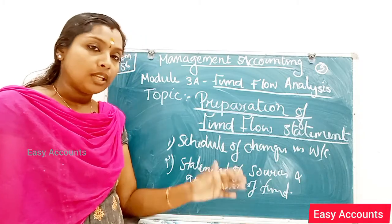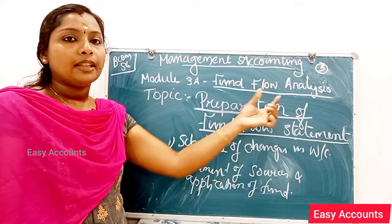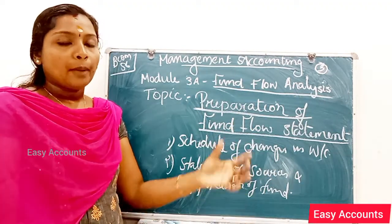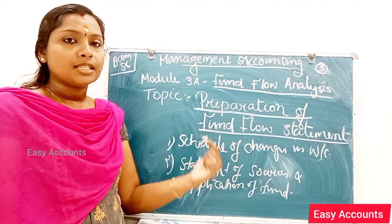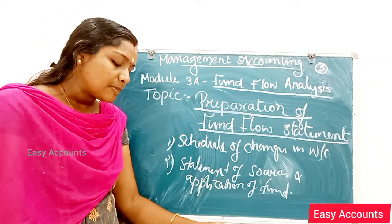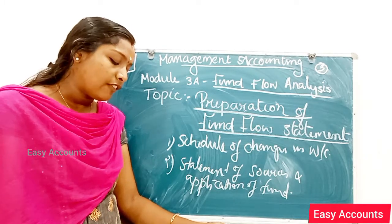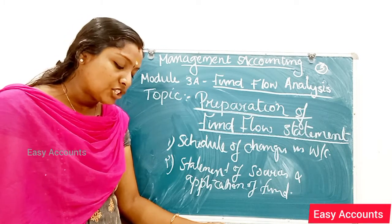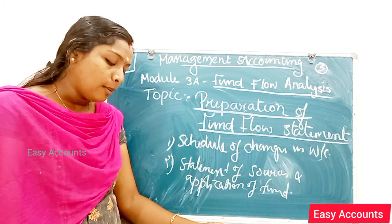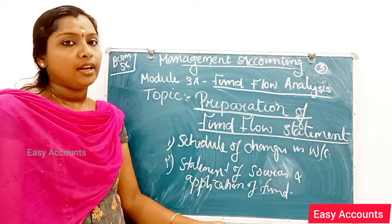The balancing figure represents the difference between the total increases and decreases, which is the net increase or decrease in working capital. It must be remembered that the schedule of changes in working capital is prepared only from accounts appearing in the balance sheet. There is no effect of additional information given in the problem — that additional information will affect the Statement of Sources and Application of Funds.